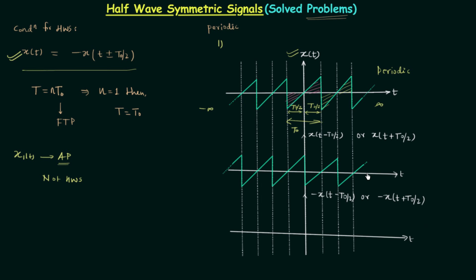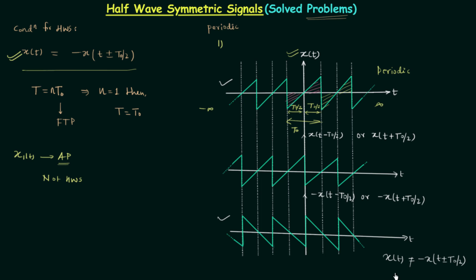In this case we have the same waveform after performing the right or left shift, but this is not true for all signals — it is true in this particular case only. Now we quickly perform the amplitude reversal, flipping the waveform about the x-axis. Comparing the first waveform and the last waveform, you can clearly see they are not the same. So x(t) is not equal to minus x(t ± T₀/2), the condition of half wave symmetry is not satisfied, and we say x(t) is not half wave symmetric. This type of signal is called a sawtooth signal, and a sawtooth signal is not half wave symmetric.